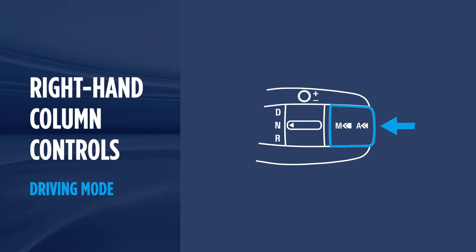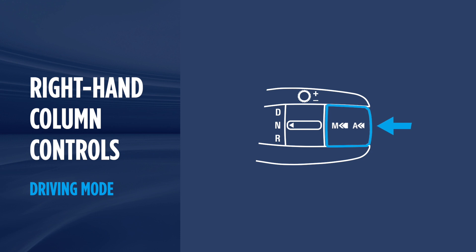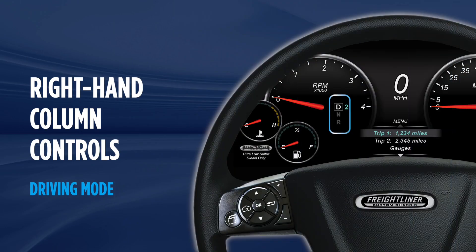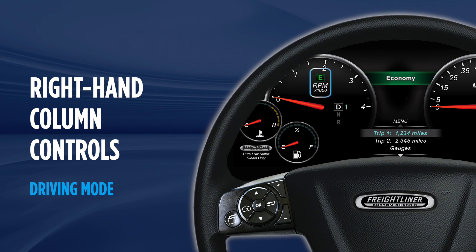You can also return to Auto Drive by tapping the button labeled A on the end of the column control. This button also functions as the toggle between driving modes — press and hold it to switch the transmission from Performance to Economy mode. Your transmission will default to Performance mode upon each start. When Economy mode is engaged, you'll see an active E-Lite in OptiView.